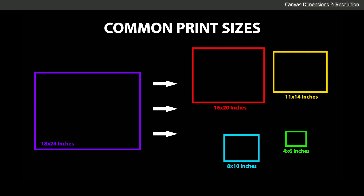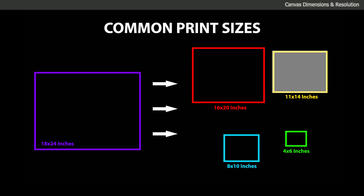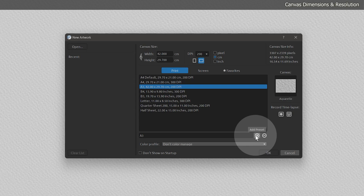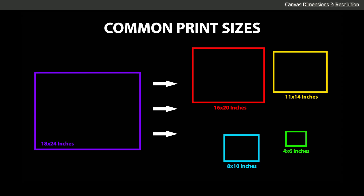It's important to choose a canvas size that matches standard print and frame sizes, such as 4x6, 8x10, 11x14, and 18x24. This ensures that your artwork fits the paper or canvas you're using for your print. If the size doesn't match, you'll either have to crop the artwork or add a border. The new artwork window offers several preset canvas sizes to choose from, and you can also create custom preset sizes.